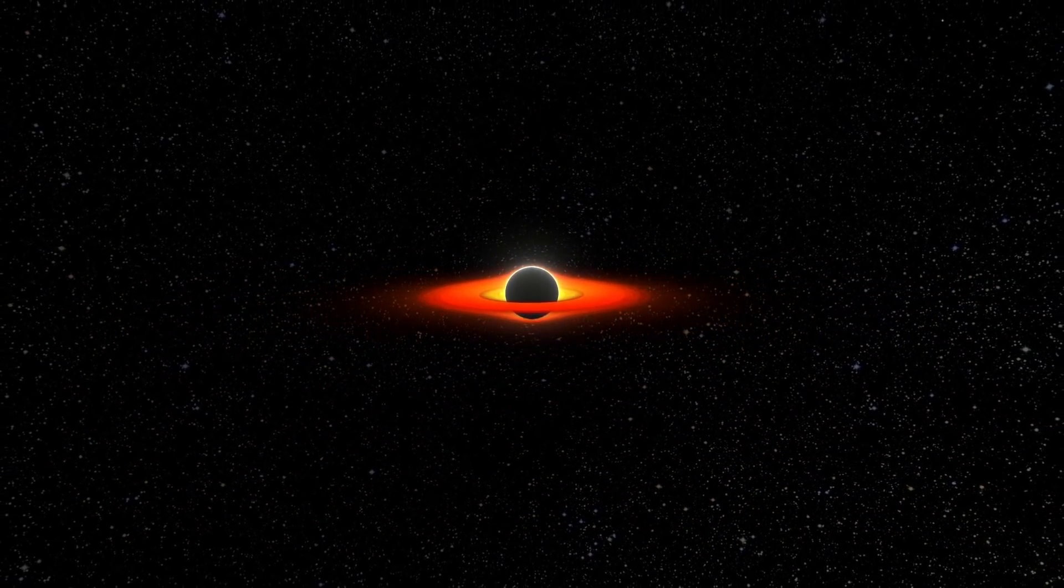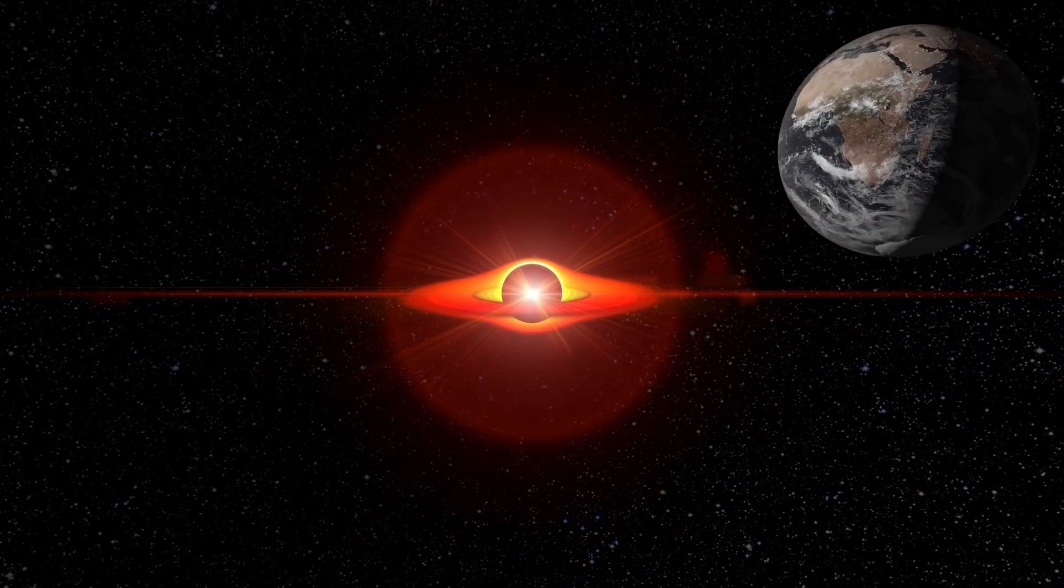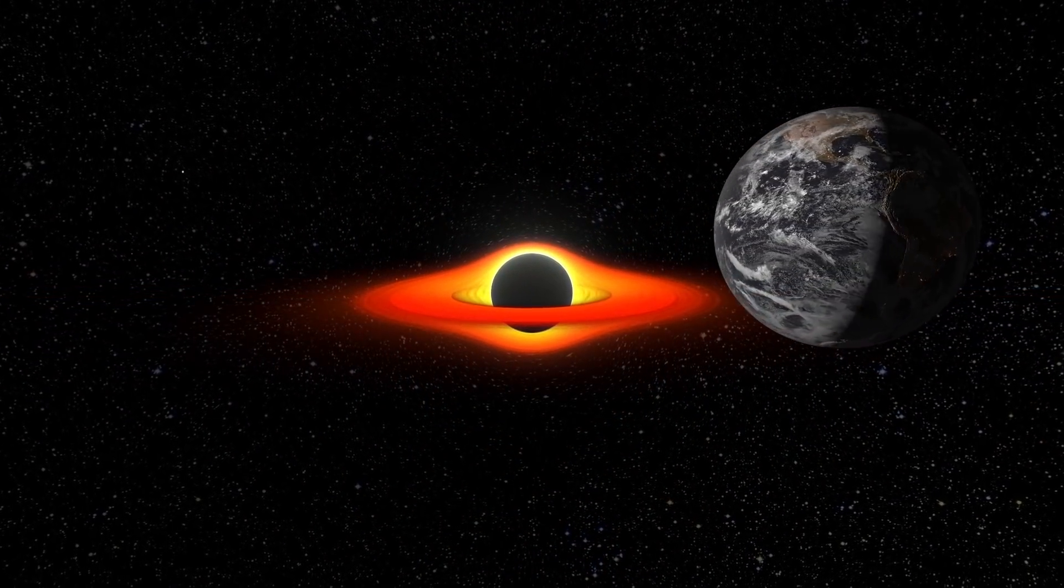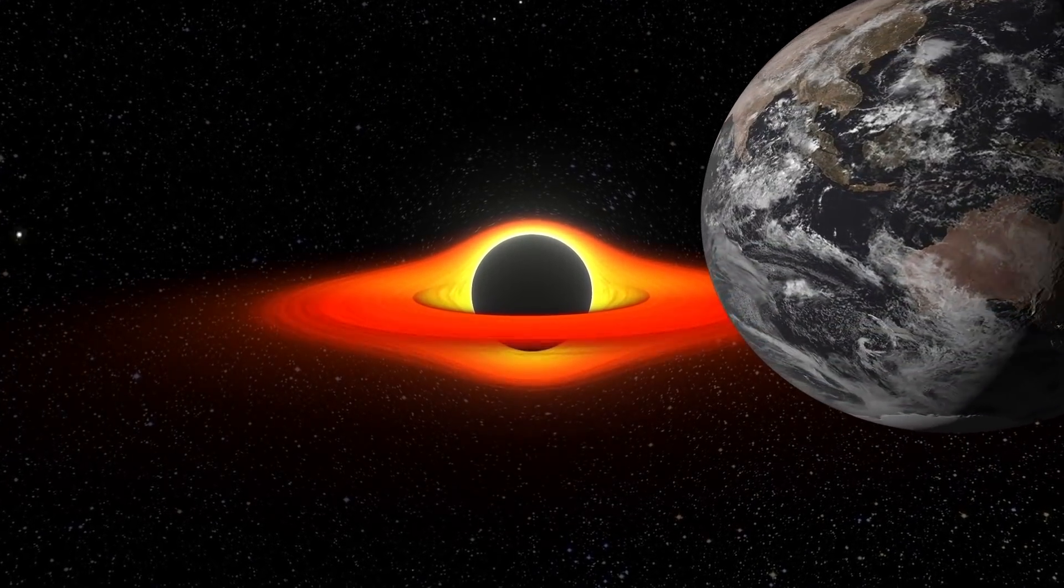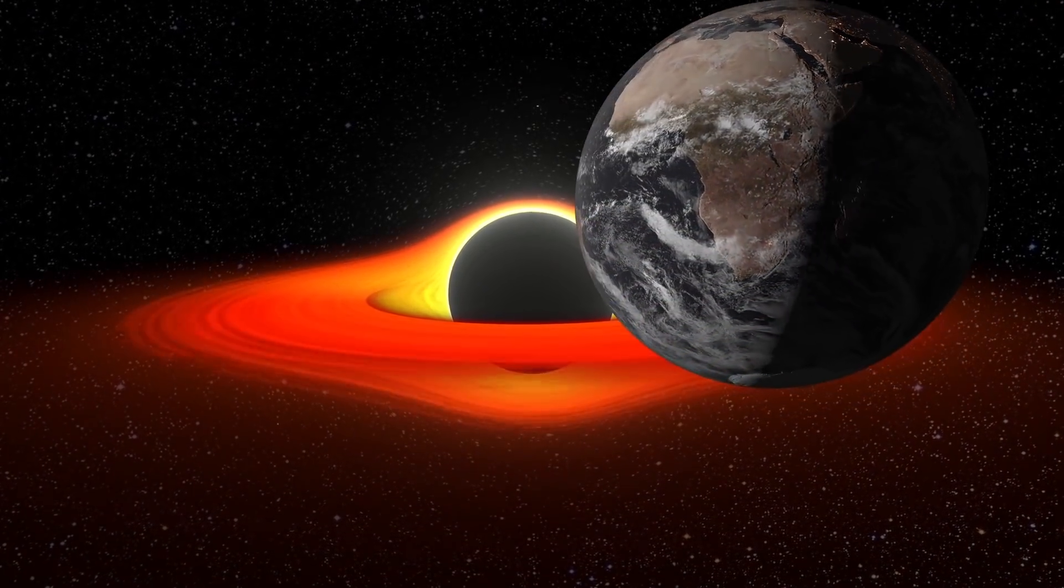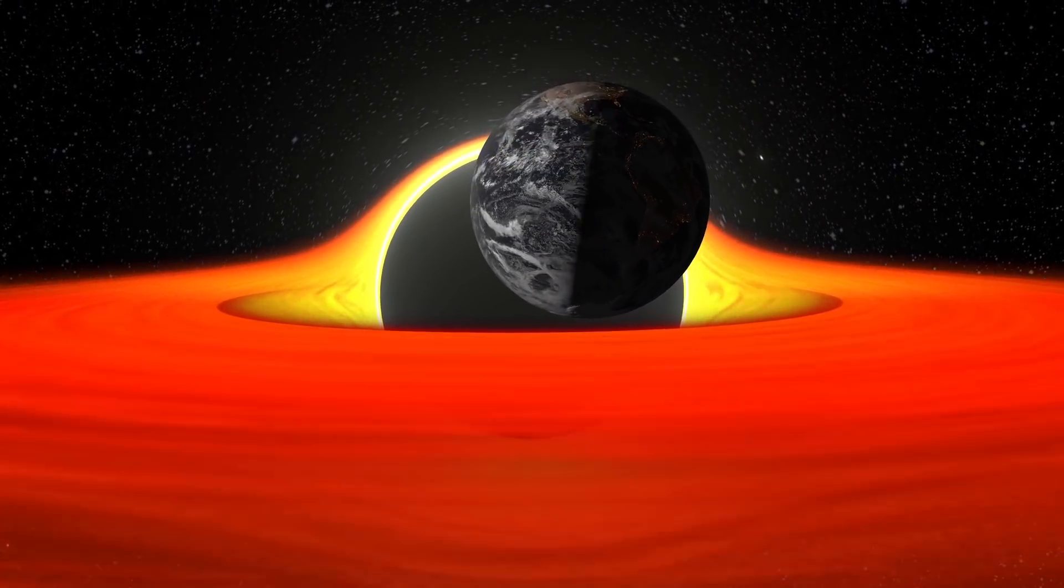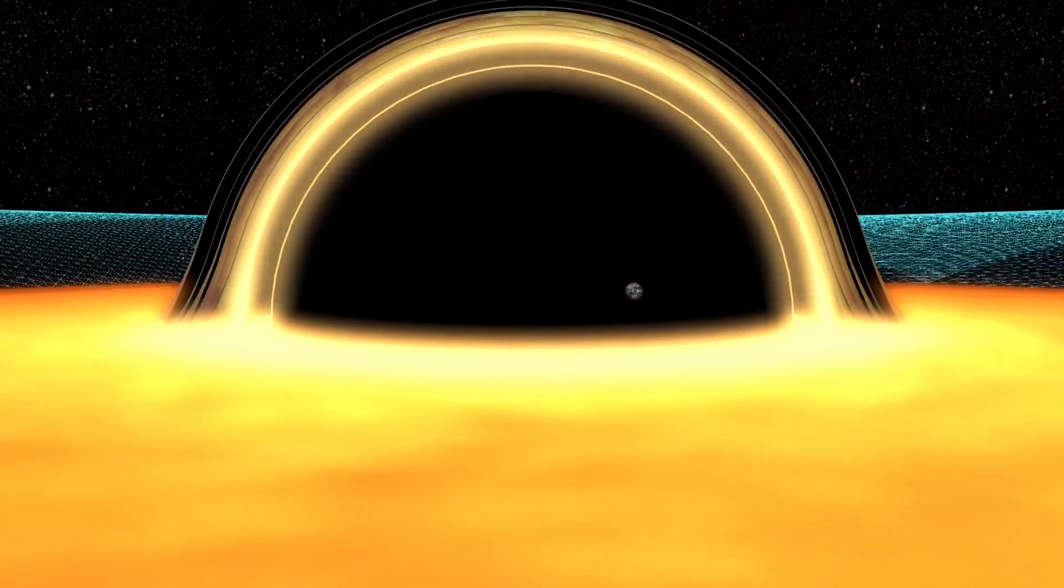Tidal forces near its event horizon are significantly weaker than those of medium-sized black holes. Because of this, we wouldn't feel the extreme impact until we were very deep inside it. Simply put, the Earth could pass the event horizon before spaghettification. To anyone watching this process from the outside, it would seem that the planet was gradually slowing down and then beginning to melt.